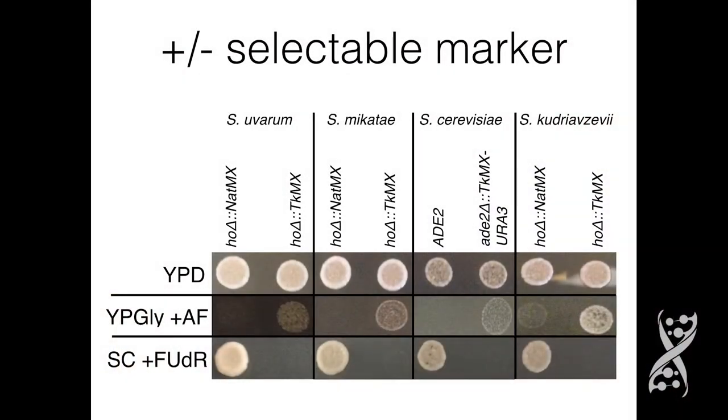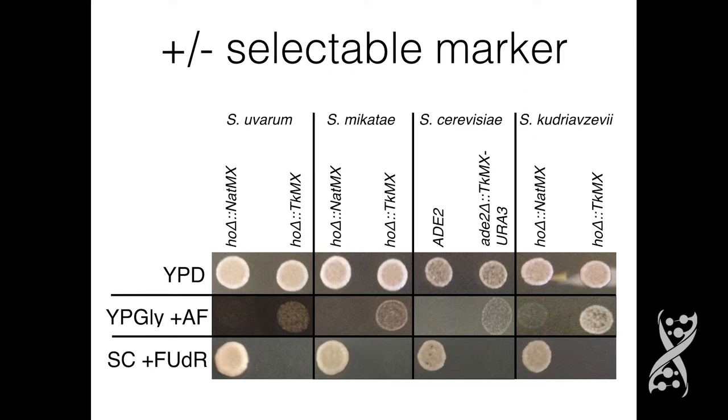What that meant is that if I could get thymidine kinase to function in one fungus, there's a possibility it could function in many fungi. I was able to come up with a selectable and counter-selectable drug regimen that functioned in yeast. For the selectable regimen, I found that a class of drugs called antifolates were able to deactivate native thymine synthesis in yeast, and then I was able to rescue cells that contain thymidine kinase by putting thymidine in their media. The drug kills cells without thymidine kinase, while cells that do have it are able to survive.